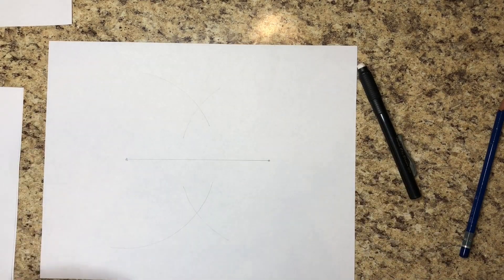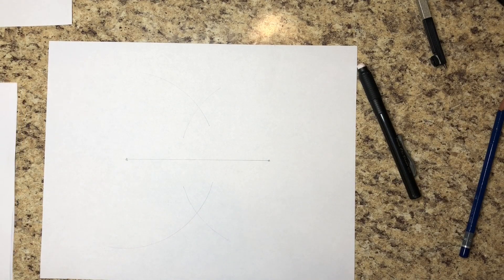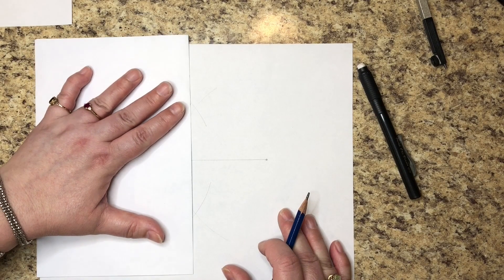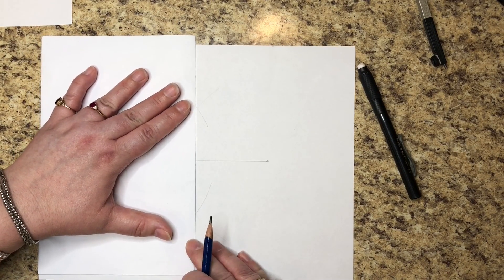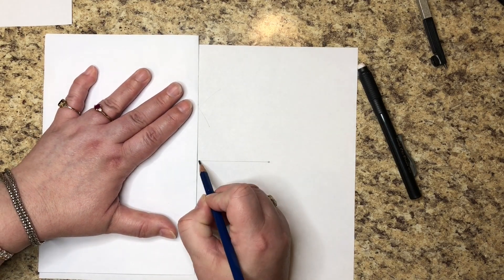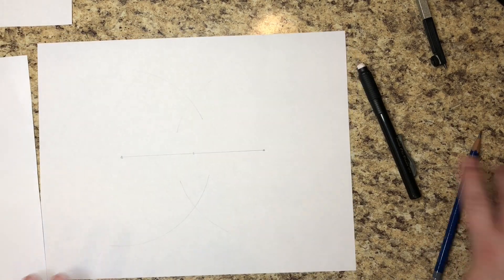Make an arc above and below. Make sure your arcs above and below cross because you're going to take a straight edge. You're going to line up where they cross. We can get it lined up. Right there is the center of your line.